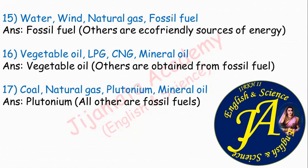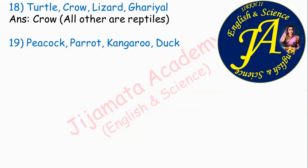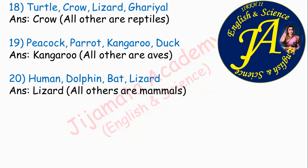Turtle, crow, lizard, gharial. The correct answer is crow, because all others are reptiles while crow is a bird included in class Aves. Peacock, parrot, kangaroo, duck — correct answer is kangaroo, because all others are birds (Aves) while kangaroo is a mammal. Human, dolphin, bat, lizard — correct answer is lizard, because all others are mammals while lizard is a reptile.